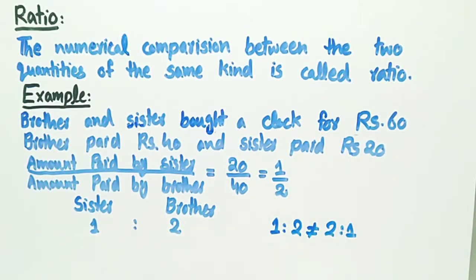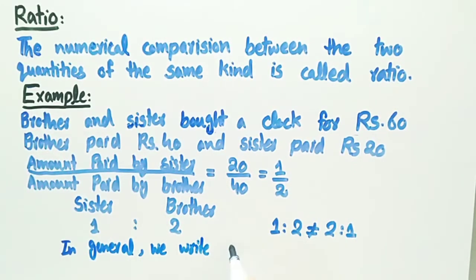In general, we write A ratio B is not equal to B ratio A.